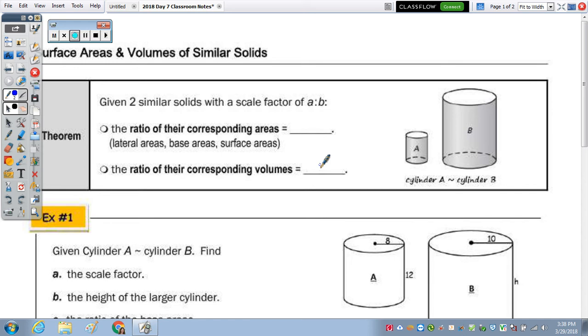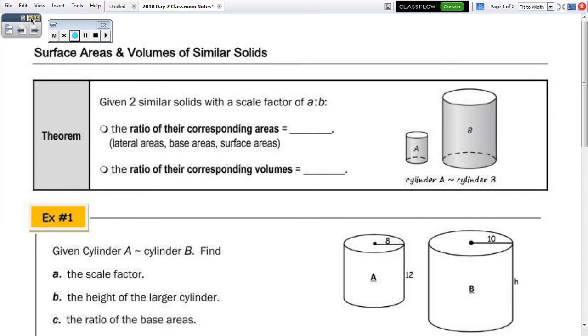Okay, in today's notes, we're going to take a look at the surface area and volumes of similar solids. So the theorem at the top of the page, we have two theorems, it states that given two similar solids, with a scale factor A to B.